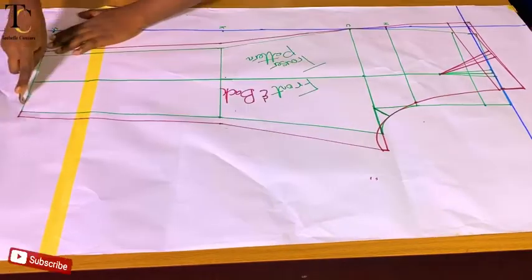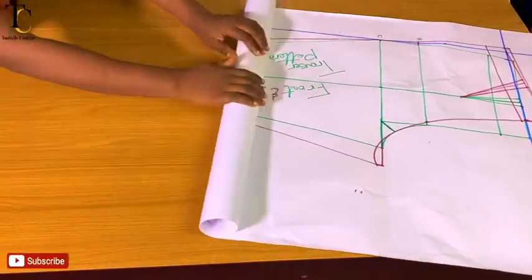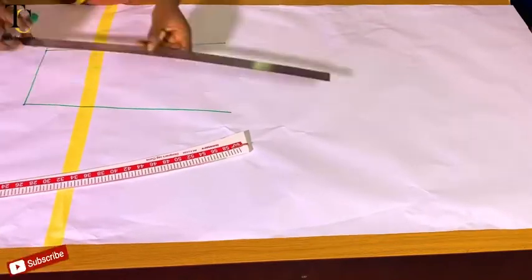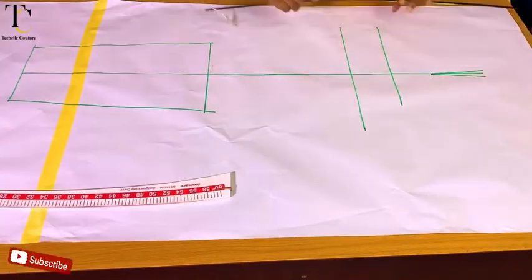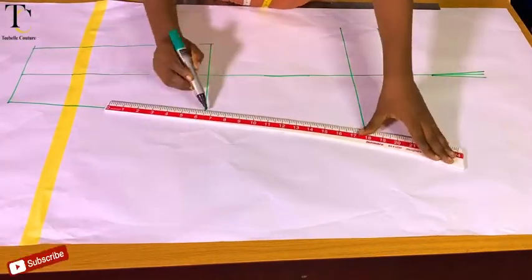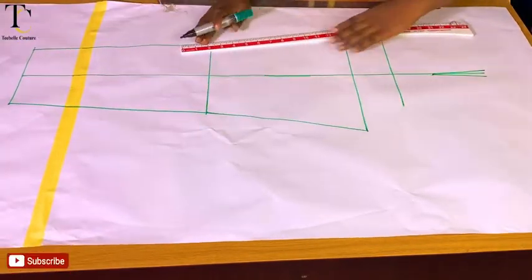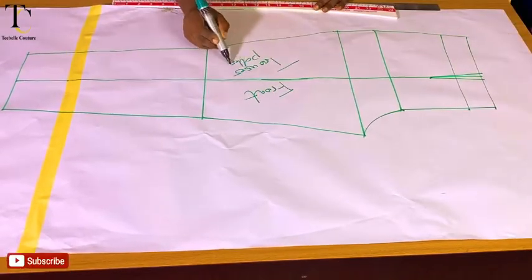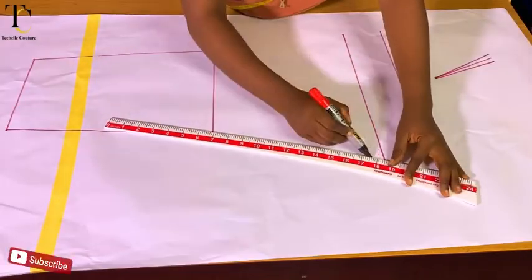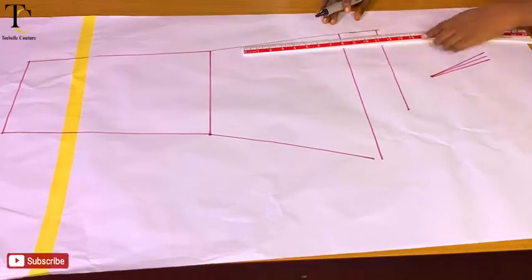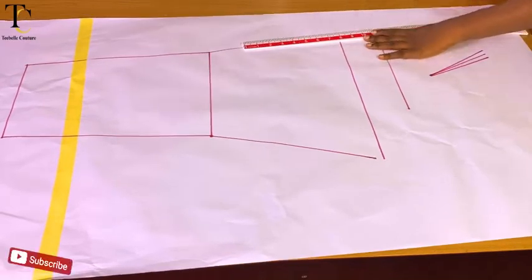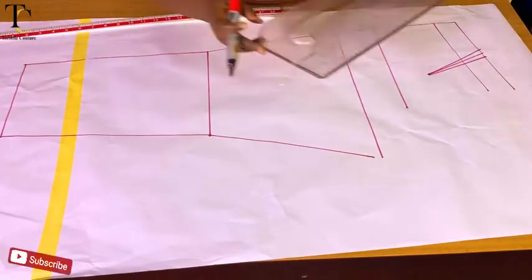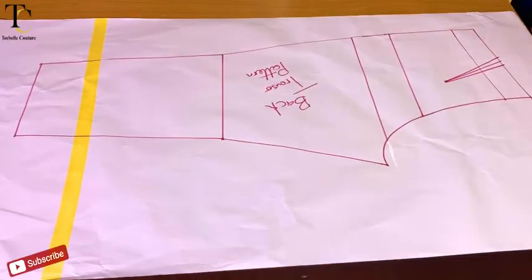I'll trace out my back trouser pattern as well, then trace it clearly with my marker for all to see. I'm separating my front trouser pattern and my back trouser pattern onto two entirely different pieces of pattern paper.